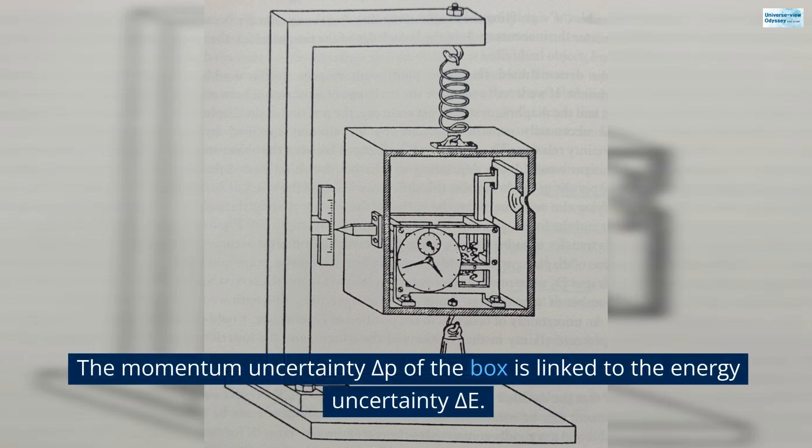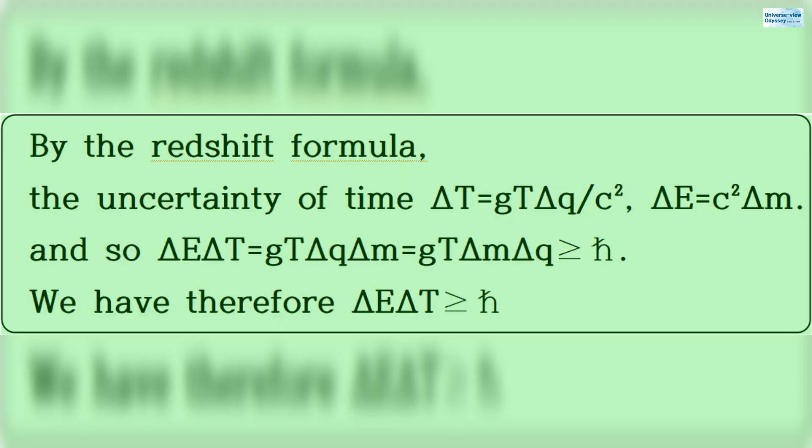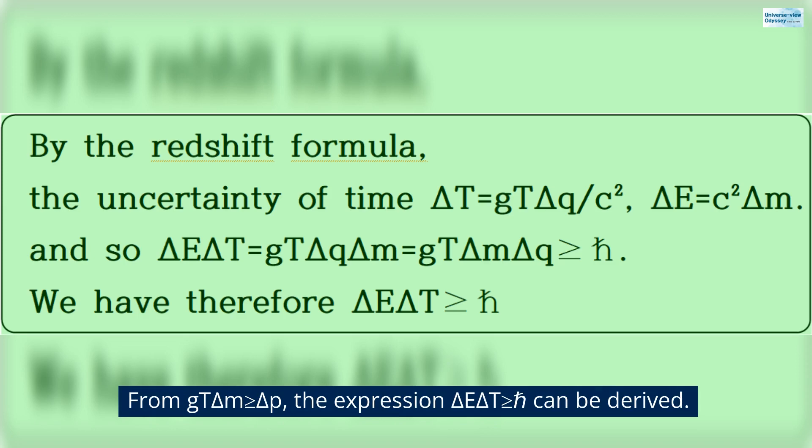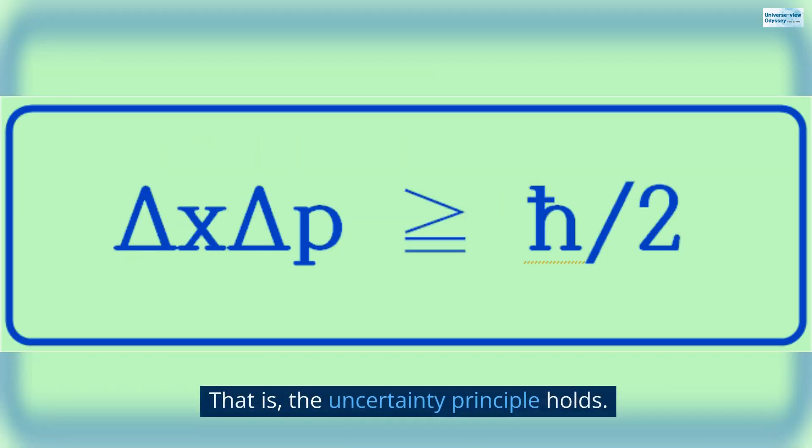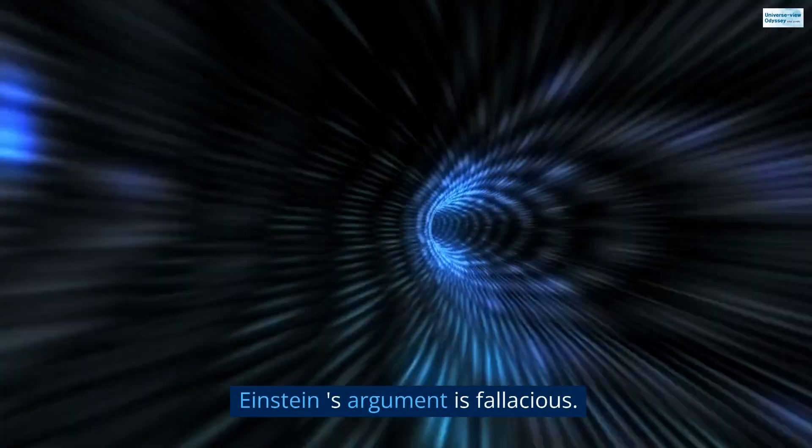Delta Q causes the time interval uncertainty delta T. The momentum uncertainty delta P of the box is linked to the energy uncertainty delta E. From G T delta M is greater than or equal to delta P, the expression delta E delta T is greater than or equal to H can be derived. That is, the uncertainty principle holds. Einstein's argument is fallacious.